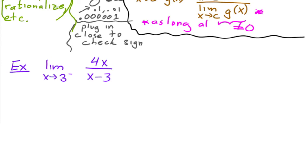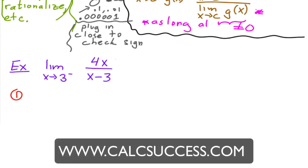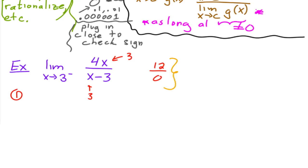Okay. So here, remember, the first thing from our strategy is you plug it in. So you would plug in the number three, and so you would get 12 on the top and zero on the bottom. So then we just talked about this. What this means, since you have a constant over zero, this means that it's going to infinity or negative infinity.